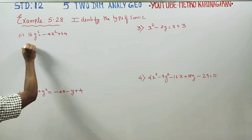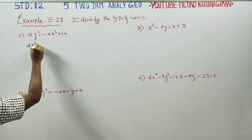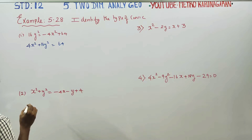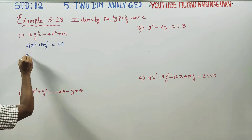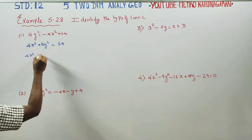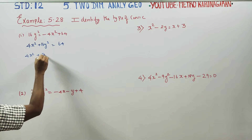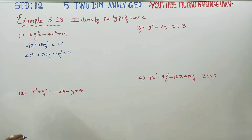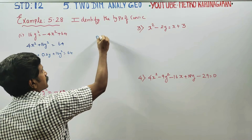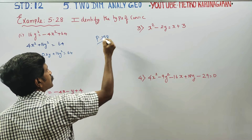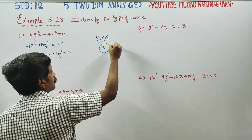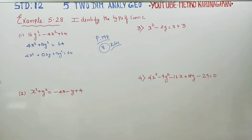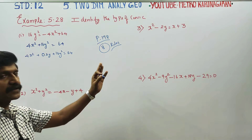The equation is: minus 4x square plus 4x square plus 16y square is equal to 64. In page 198, we have 8 rules to identify a conic. If you look at the pair of straight line coordinate axis, you will see these 8 rules.